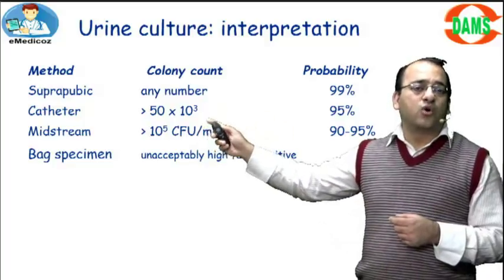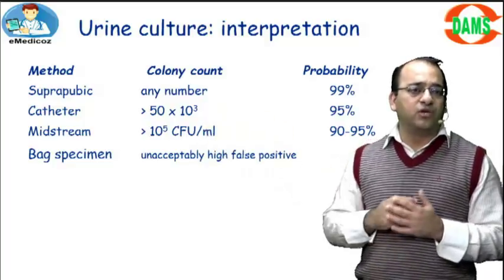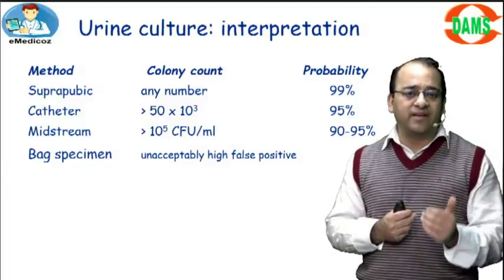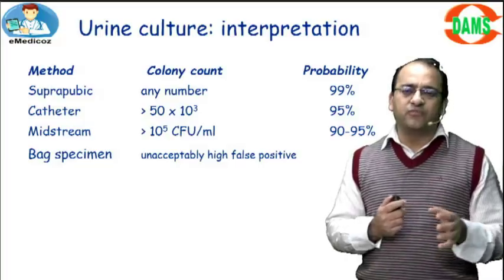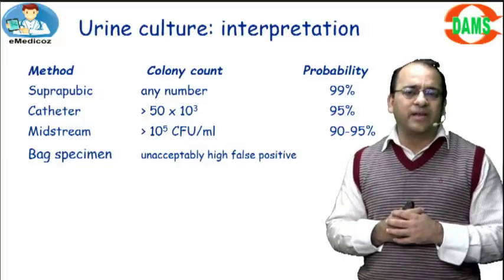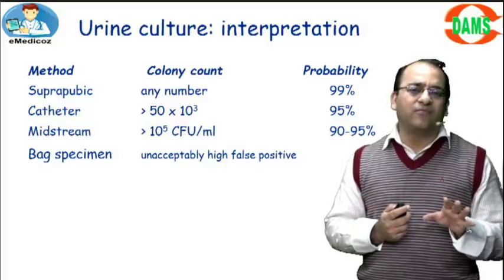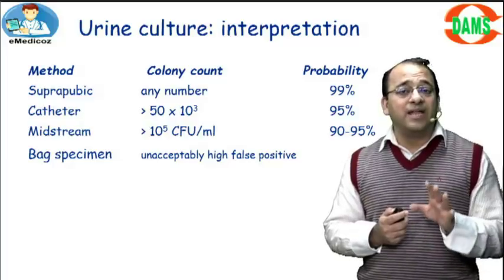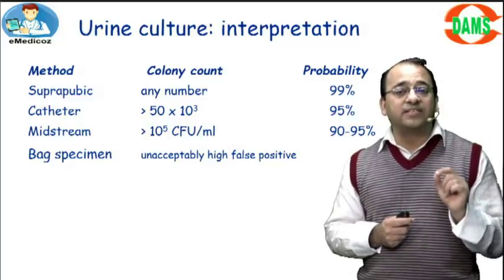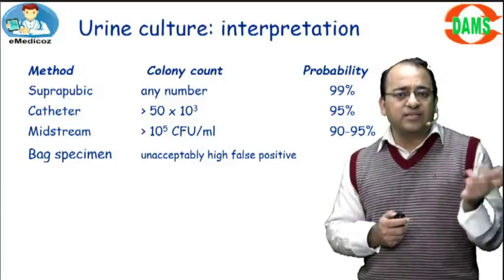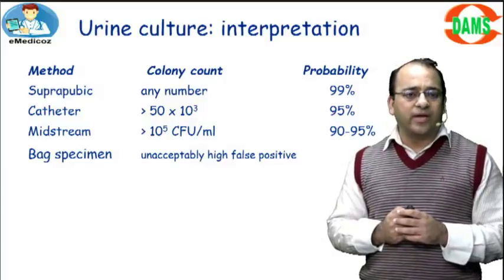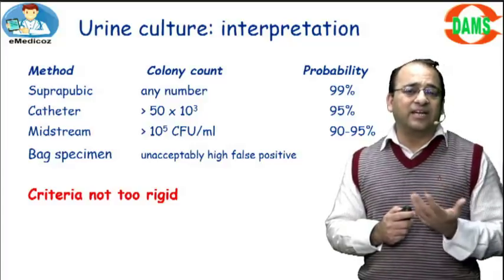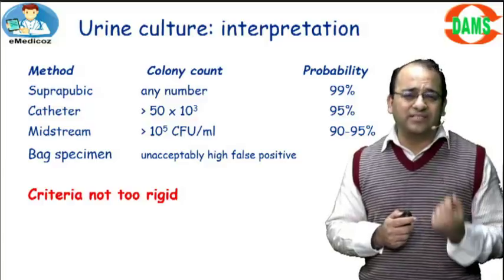On a clean-catch midstream sample you need more than 100,000 colony forming units per mL (10 to the power 5). Bag specimens placed on the child's pubic area are highly falsely positive, but they have a very good negative predictive value — if a bag specimen is negative, the child is not having UTI.